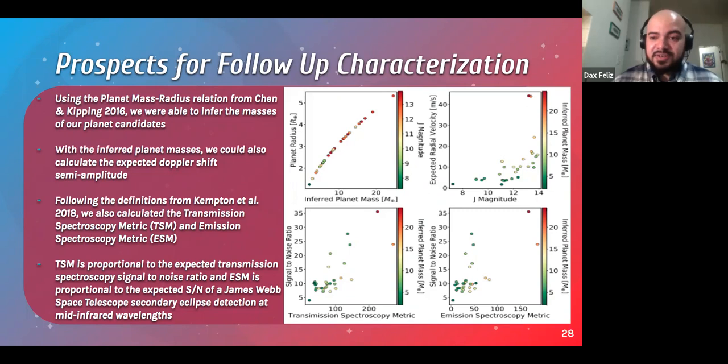So here on this upper left panel is our planet radius as a function of inferred planet mass, where they're colored by the J magnitude of our targets. And as you can see, many of our targets are pretty faint in J magnitude. And with those inferred masses, we're able to calculate the expected Doppler shift or radial velocity in meters per second, which brings us to this upper right panel, where we have our inferred masses, now the color scale and our J magnitude on the X axis. And many of our candidates have expected radial velocities of more than a few meters per second. And current facilities that do Doppler spectroscopy, they can maintain precision of about a meter per second. So they should be able to observe quite a few of these candidates.